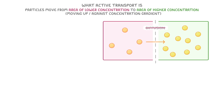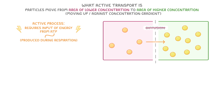Because active transport works against the natural flow, we describe it as an active process, meaning it requires an input of energy which comes from ATP, a molecule that's produced during respiration.